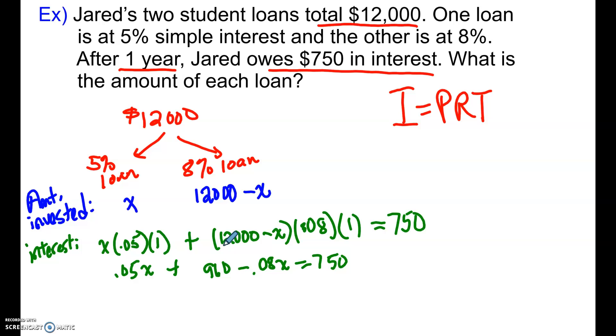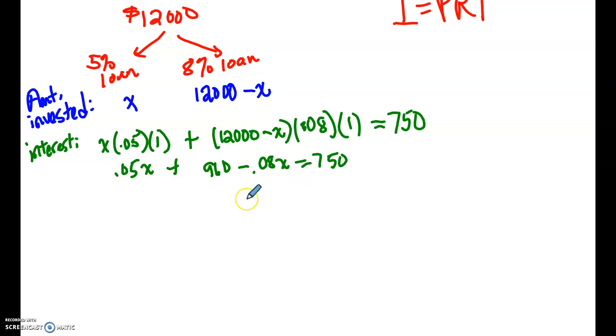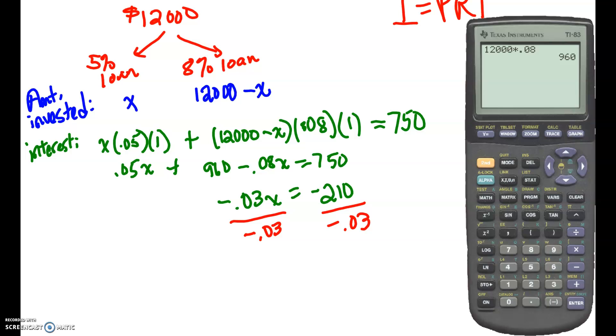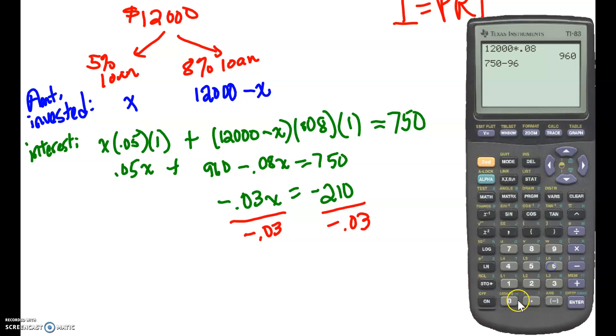Now, finishing this problem out, we're going to do a little bit of algebra. So I'm going to combine my like terms, and I'm going to have a negative 0.03x. I'm going to subtract the 960 from the other side. That would be negative 210. And then I'm going to need to divide. So I divide by negative 0.03 on both sides. And while I'm doing that, I'm going to double check my math again. So if I have 750 minus the 960, that does indeed leave me with negative 210. And then we divide that by negative 0.03 to get 7,000.